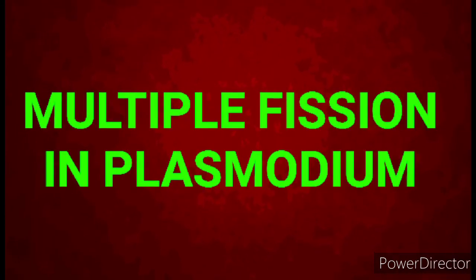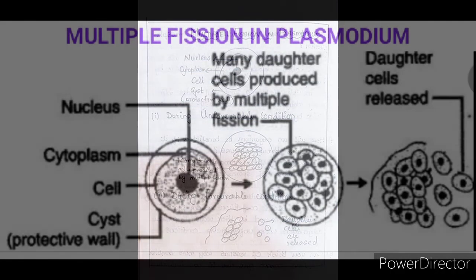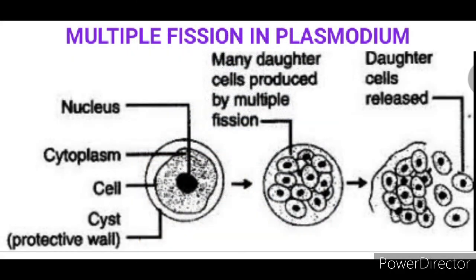Coming to the second type of fission called multiple fission — in other unicellular organisms such as the malarial parasite plasmodium, which causes malaria in human beings, the parent nucleus divides repeatedly, followed by repeated cytoplasmic division, forming many daughter cells. All these daughter cells are protected by an outer covering called a cyst. When favorable conditions are reached, the cyst wall breaks and releases the daughter cells, each of which develops into a young one.